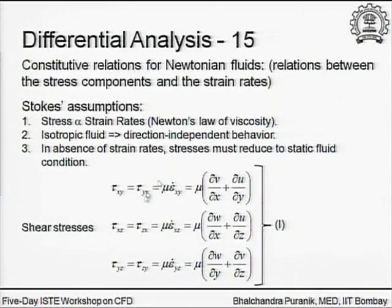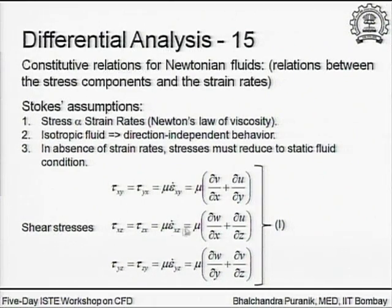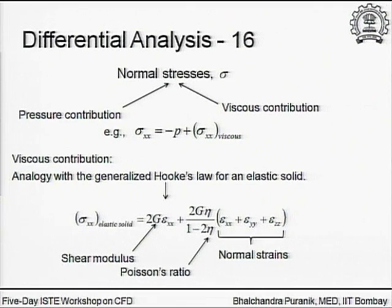This is still a fairly intuitive statement: tau equals mu times strain rate, now in two or three dimensions. In the pure one-dimensional shear flow we only had du/dy; now the dv/dx component is also added because of the multi-dimensionality of the flow, and so on for the remaining components. That covers the shear stress relations.